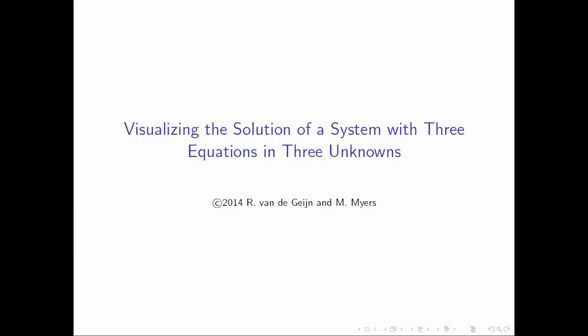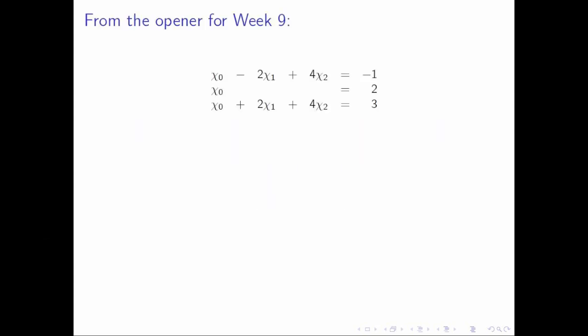What we're going to do in this opener is help you visualize the solution of a system with three equations in three unknowns. And the example we're going to use is from the opener for week 9. Remember that back then we were trying to fit a second degree polynomial to three points. And this led to three equations in three unknowns. And the solution to that system of linear equations turned out to be the coefficients of the second degree polynomial. The solution happened to be 2, 1, minus 0.25.